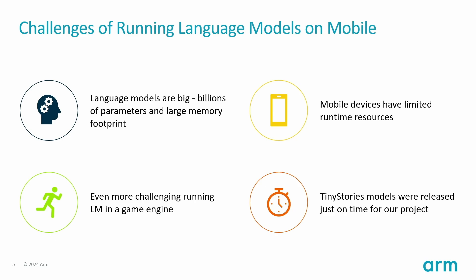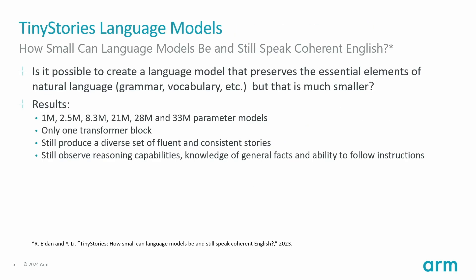We turned our attention to a series of highly compact language models called Tiny Stories. The Tiny Stories project wanted to explore the smallest possible language model that can still generate coherent and consistent English, among other features. As a result, this work produced a series of small language models with a number of parameters ranging from 1 million to 33 million — not billions — and architectures ranging from a single transformer layer to 4, with the vocabulary and knowledge of a typical 3 to 4-year-old child.